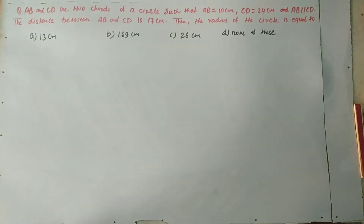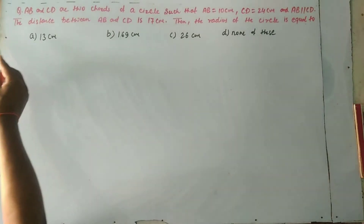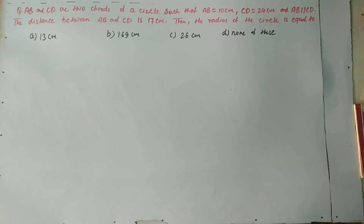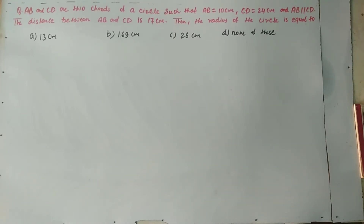Hello dear students, I am discussing quantitative aptitude. AB and CD are two chords of a circle such that AB equals 10 cm, CD equals 24 cm, and AB is parallel to CD. The distance between AB and CD is 17 cm. Then the radius of the circle is equal to — option A: